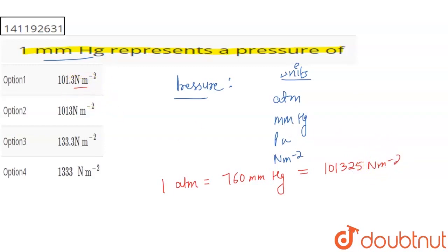You have to convert to 1 mmHg, right? So, 760 mmHg is equal to Newton-meter minus 2. So, 1 mmHg is equal to 101325 divided by 760.